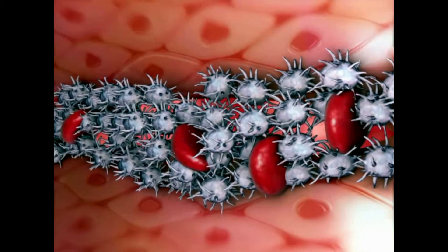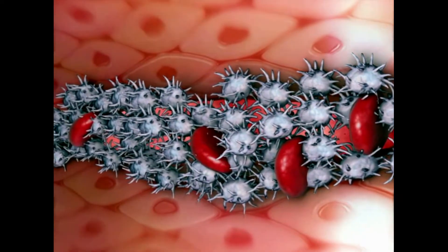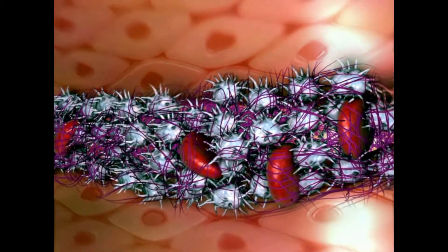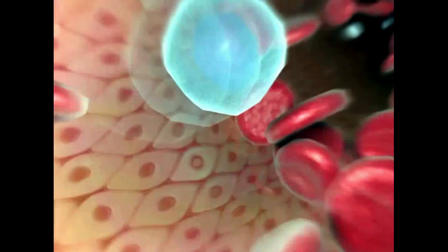Blood proteins known as clotting factors form fibrin threads. Millions of platelets, together with the fibrin threads, form a platelet plug. If the tear is small enough, the plug can stop blood loss completely.